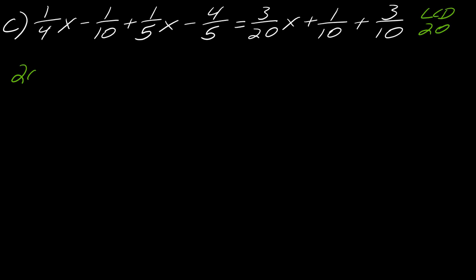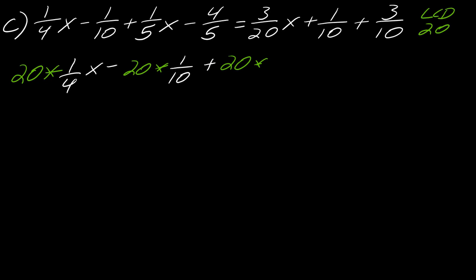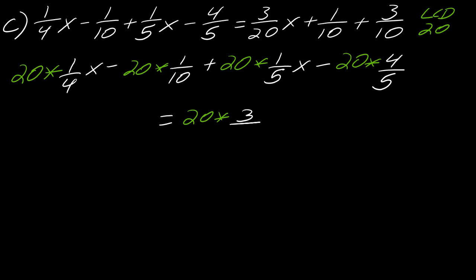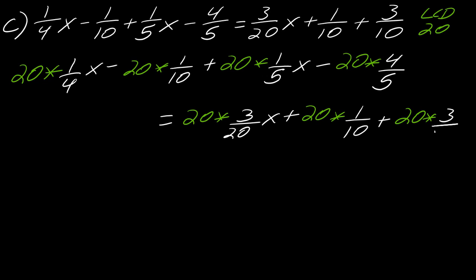So I've got 20 times (1/4)x, minus 20 times 1/10, plus 20 times (1/5)x, minus 20 times 4/5 — and that all equals 20 times (3/20)x, plus 20 times 1/10, plus 20 times 3/10.